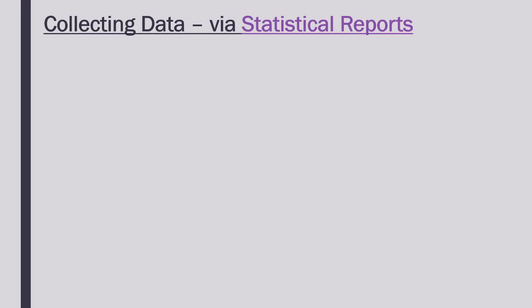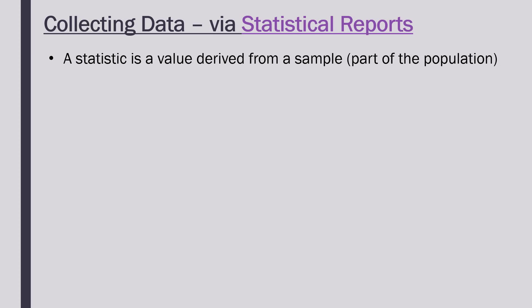Another way of collecting data is using statistical reports. A statistic is a value derived from a sample. A sample is part of a population — you're not taking into account every single person, just a smaller group, often quite small, and you are getting some value from this. Maybe the average income, maybe the average age — some value derived from the smaller group of people.